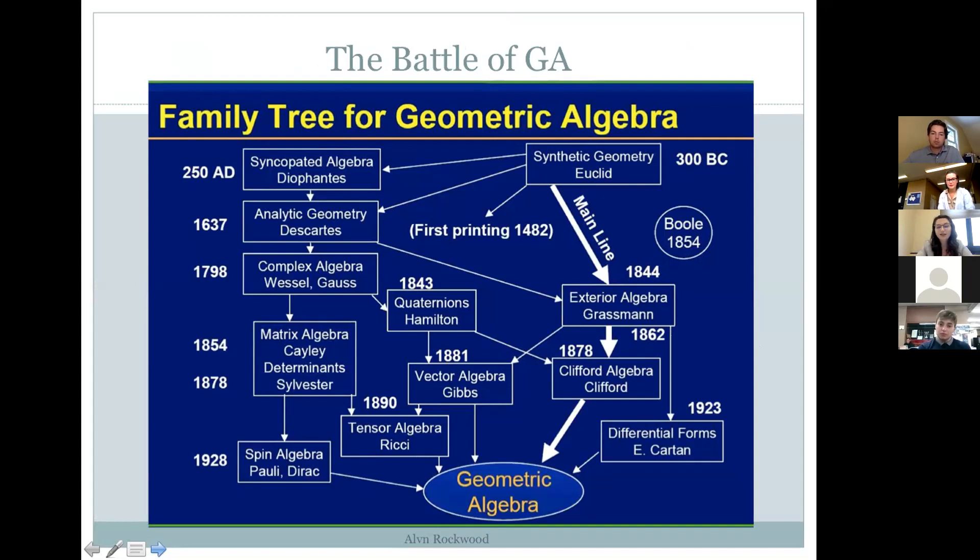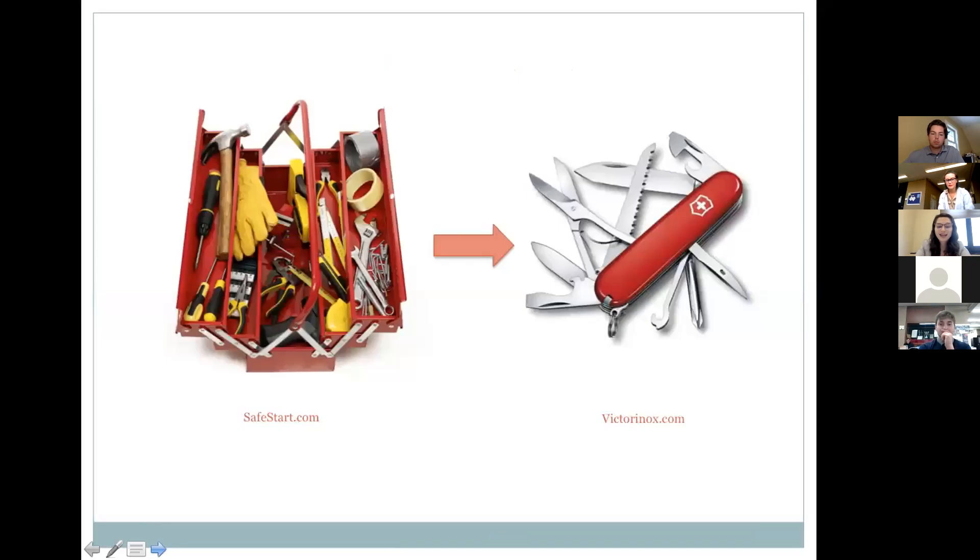Geometric algebra, however, takes all of these boxes that you see in this image and replaces them with one set of rules with the same notation, and that is geometric algebra. This is like taking all the tools you can find in a toolbox and creating one tool with them, sort of like the Swiss army knife, but a lot more inclusive.